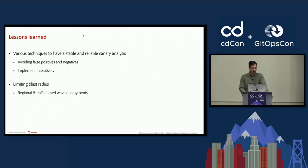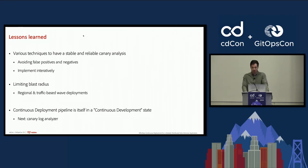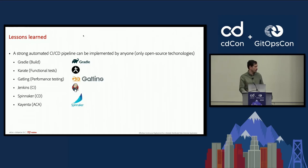Sometimes you can catch regressions only in production, and by adopting a wave pattern the impact can be reduced without breaking SLAs. Building a strong CD pipeline is an iterative process and we are always looking to improve — next on our radar is analyzing and comparing application logs. You can adopt any of these techniques since we've used only open source technologies to implement them, and you can adopt them even if you have a different technology stack than ours.